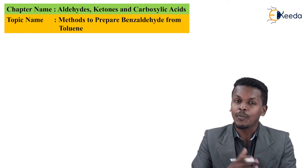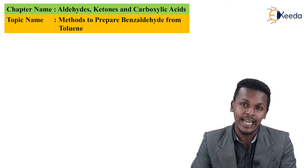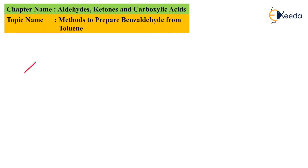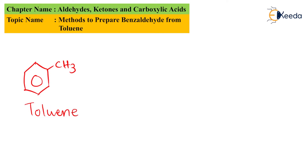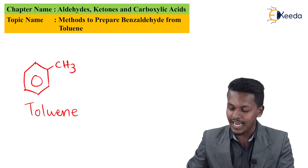The aromatic aldehyde I'm going to talk about is the preparation of benzaldehyde from toluene. So suppose we have a benzene ring to which a CH3 group is attached — this reactant is known as toluene. We cannot directly convert this CH3 group into a CHO group, so for that we have to do a chlorination reaction.